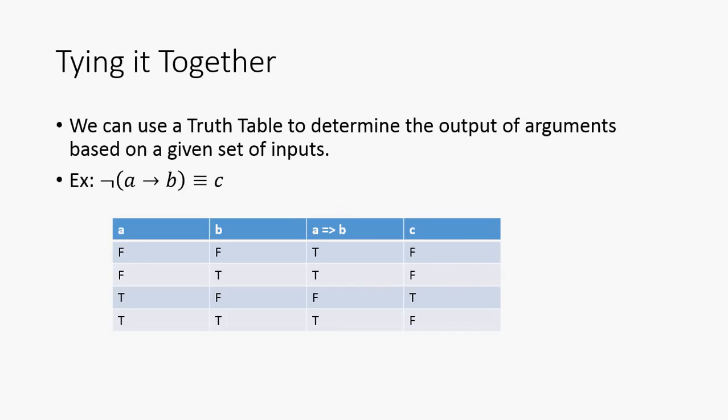So, now tying it together, we can use a truth table to determine the outputs of arguments based on a given set of inputs. So, we have A and B, and then we have our result C. So, first we begin with A, and then we begin with B, listed like so.